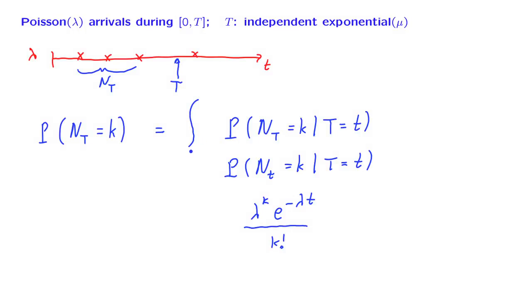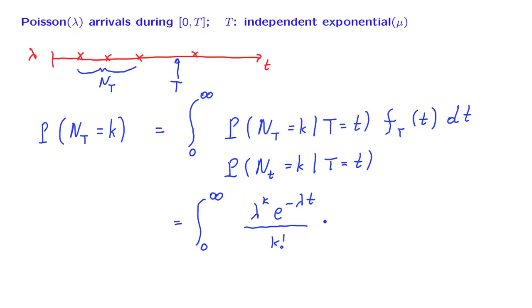Now, if we have this conditional probability, how can we get the unconditional probability? This is done using the total probability theorem. We consider all possible values of little t from 0 to infinity, and weigh each value according to the PDF of the random variable T. Since T is exponential, its density takes the exponential form. So to find the distribution of N_T, all we need to do is calculate this integral — but this is a rather messy integral, so let us try to find a shortcut.